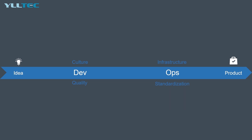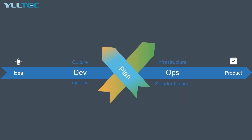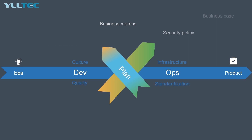Then you start with planning. Planning provides transparency to stakeholders. DevOps planning refers to business value and application requirements. Planning activities include production metrics, objects and feedback, requirements — both functional and non-functional — business metrics, security policies, release planning, timings, and business case.